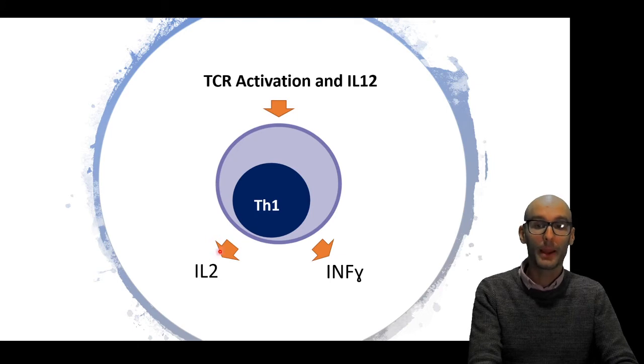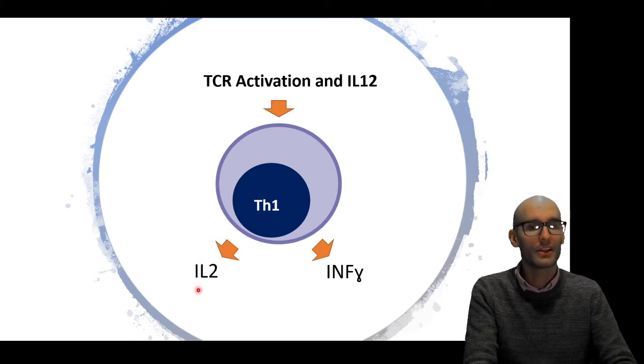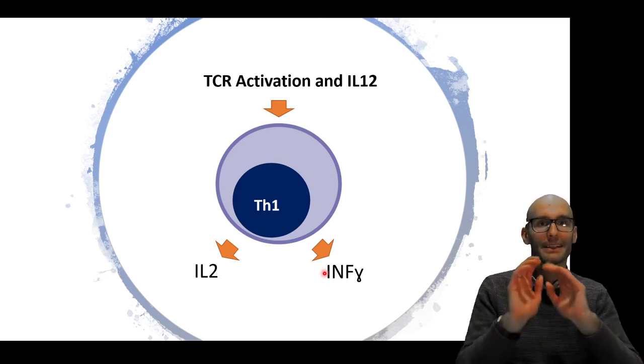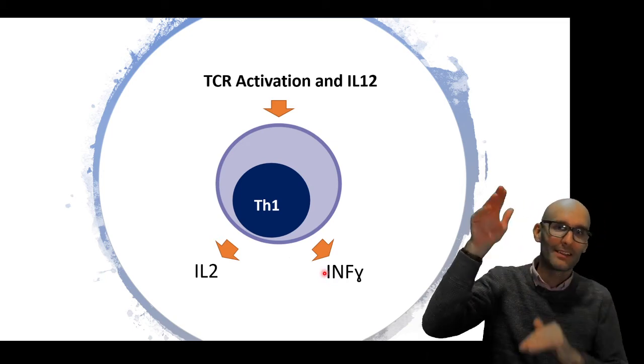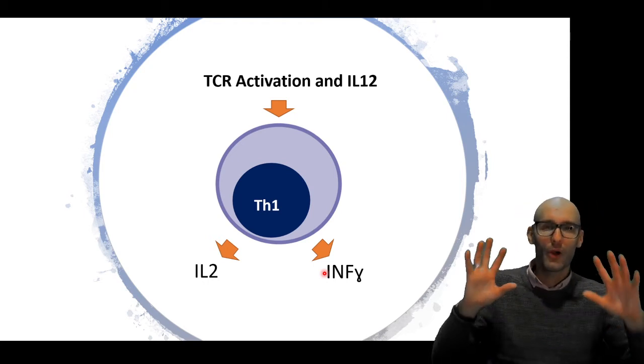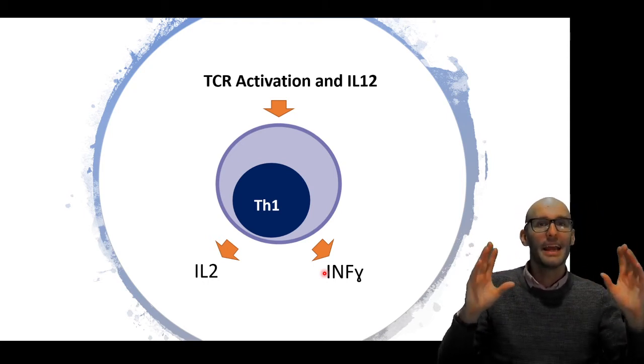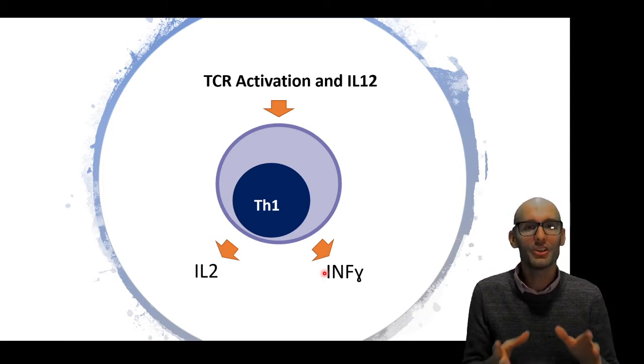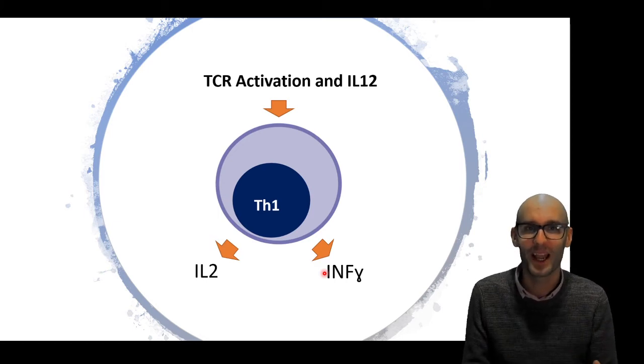And it does so by producing the cytokine interleukin-2 and interferon gamma. Now in a later video, I will release a big list of cytokines and what they do and cell types and what they do. And it will help sort of coordinate it in your head. It is a lot to remember, but these are the defining principles of immunology.